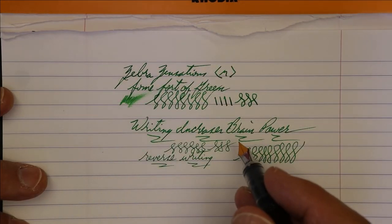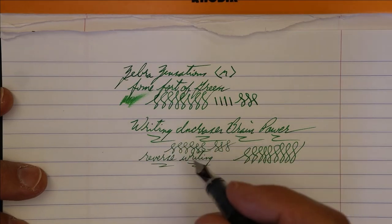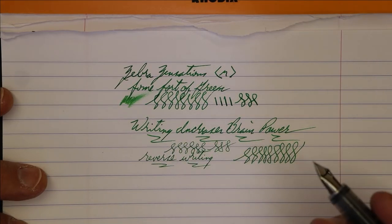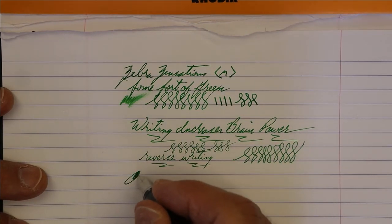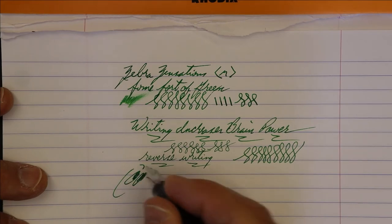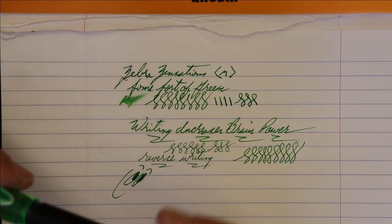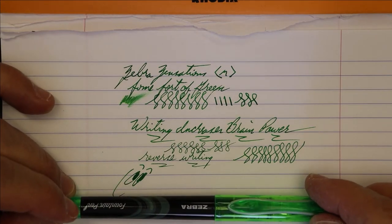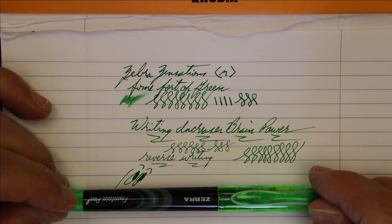All that said, I'm very impressed with this under five dollar fountain pen. It writes as good as any of my more expensive fountain pens, and so I am happy. All right, there you go. There is a writing sample for the Zebra Zensations fountain pen.